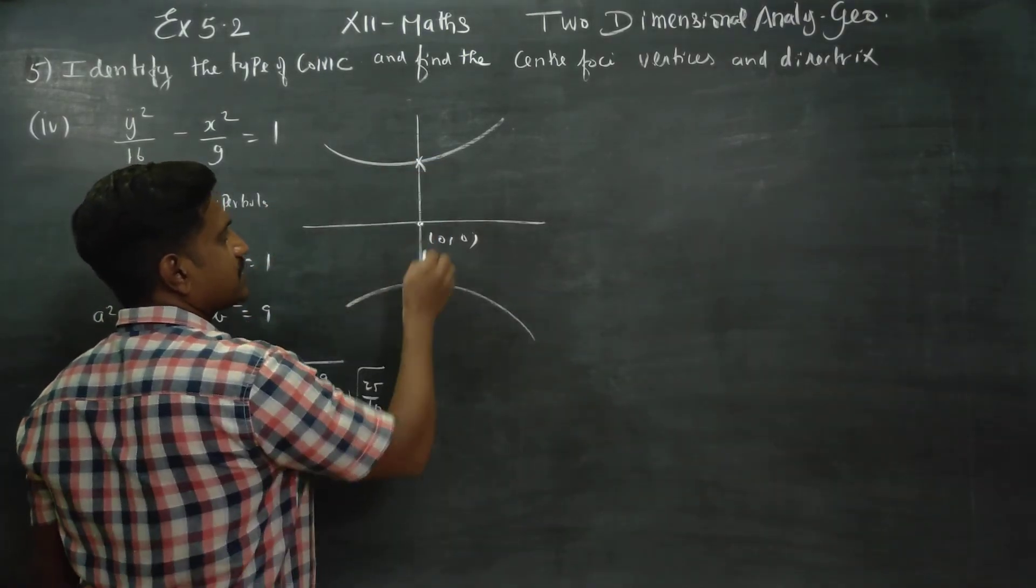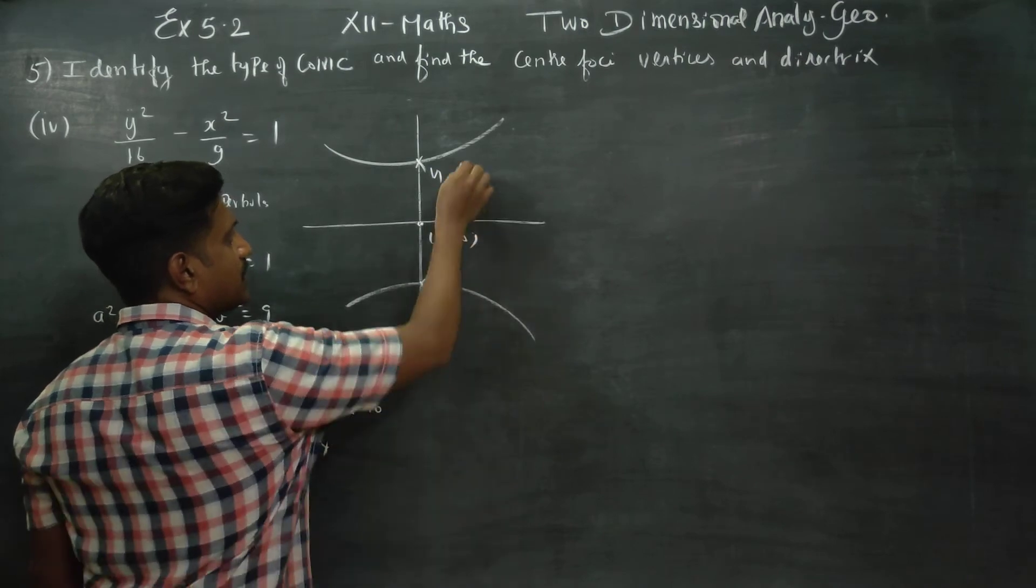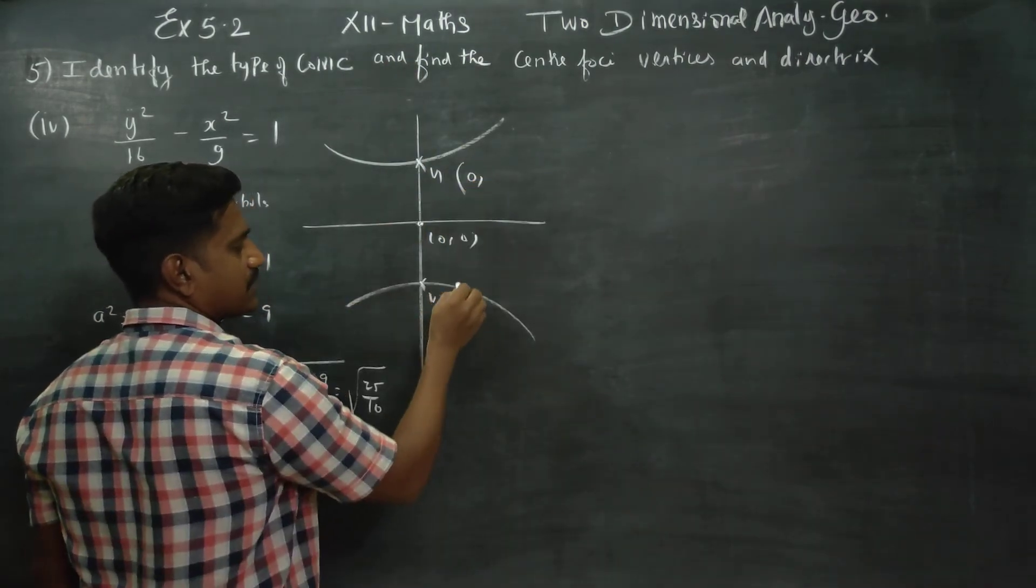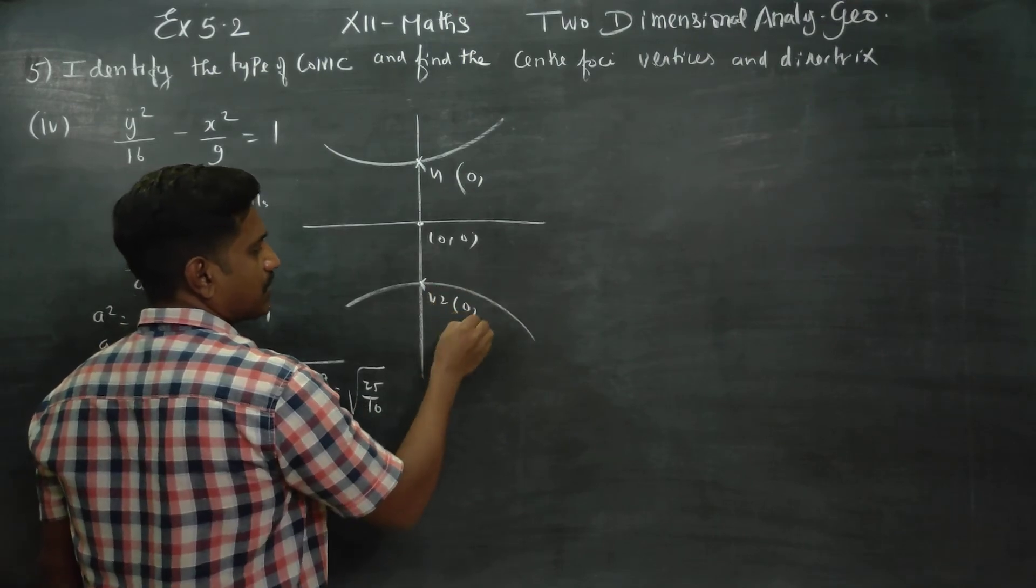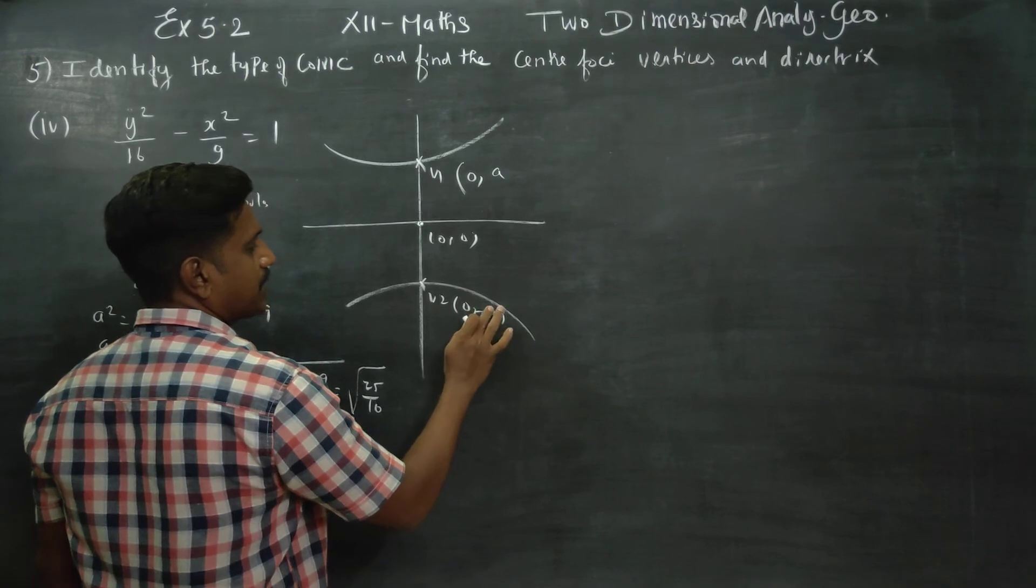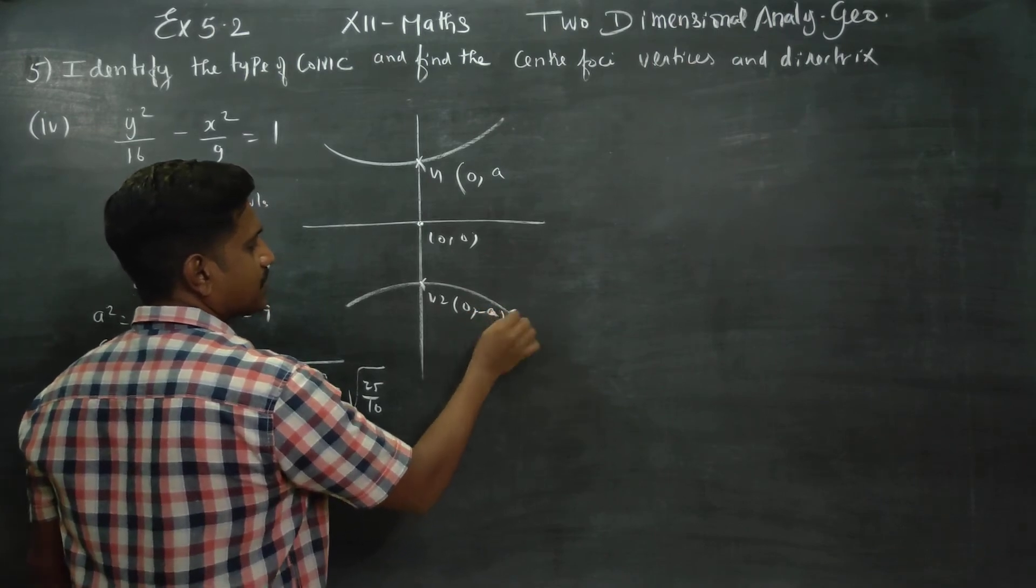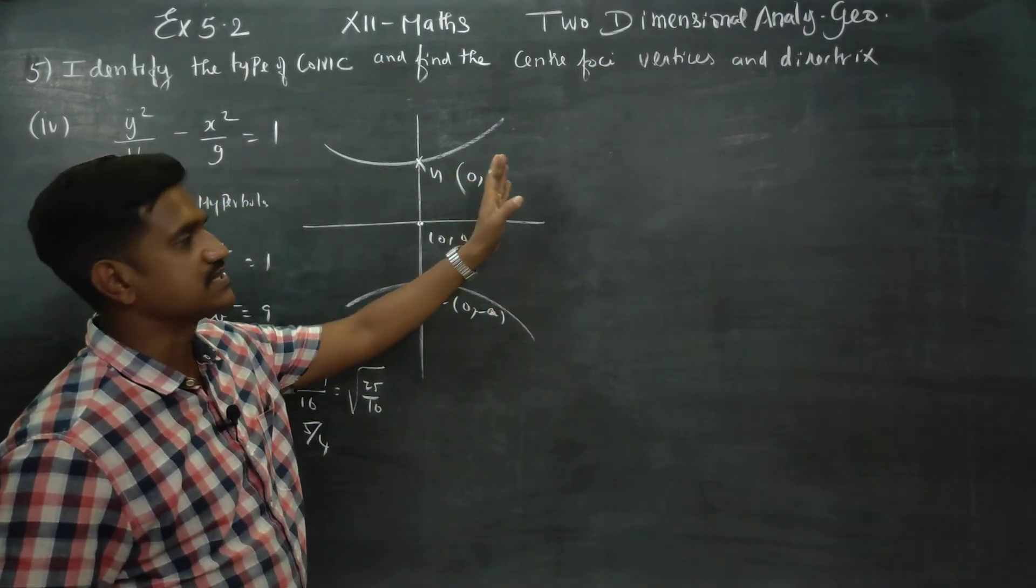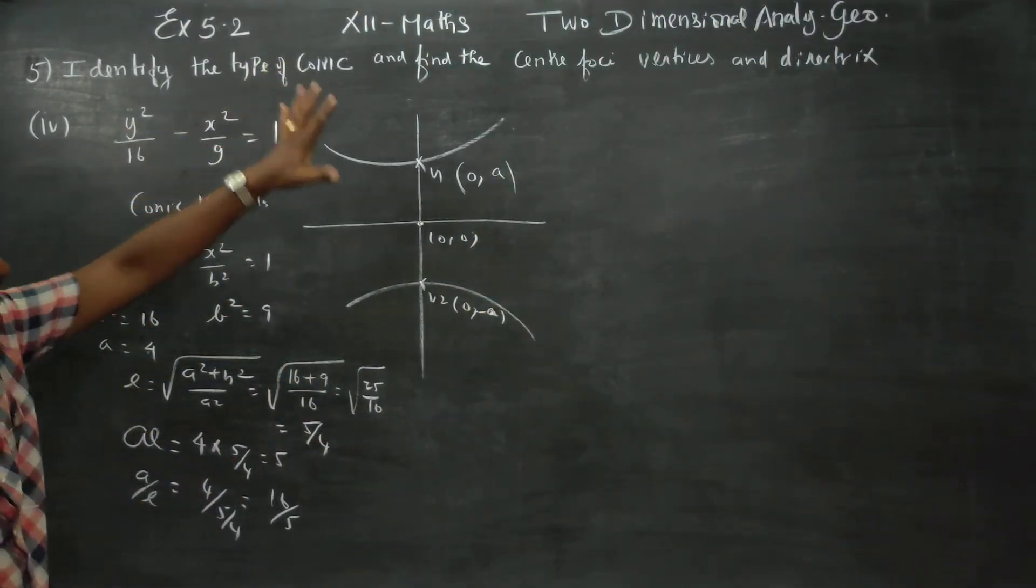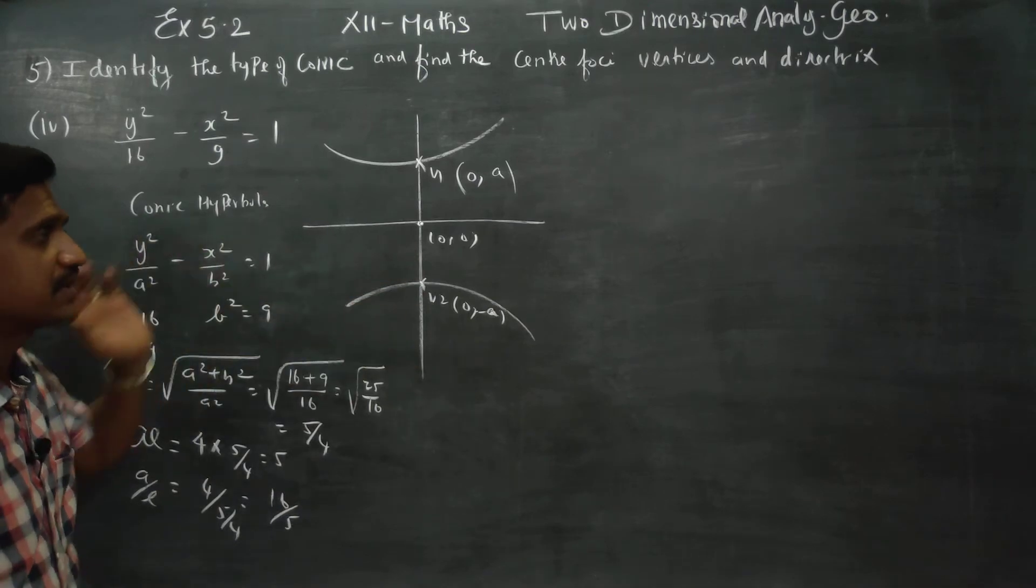These are the two vertices, v1, v2. This is on the y-axis. X will be 0. So it's 0, a and 0, minus a, right? Plus a above, minus a below. For H, K you add plus h, plus k to these values. This is the standard type formula, simple formula.